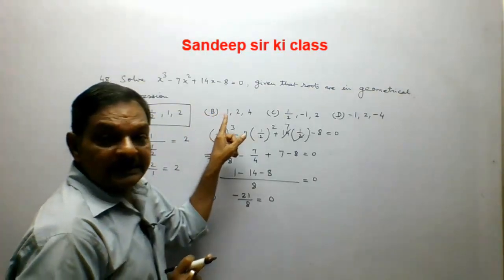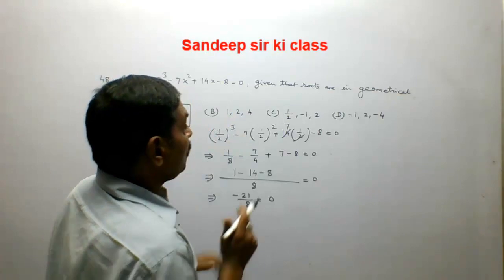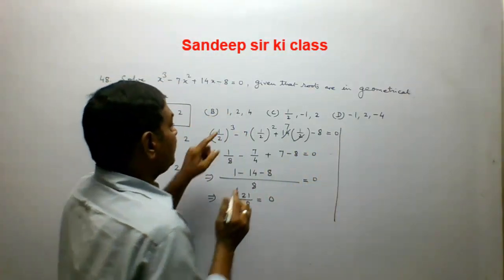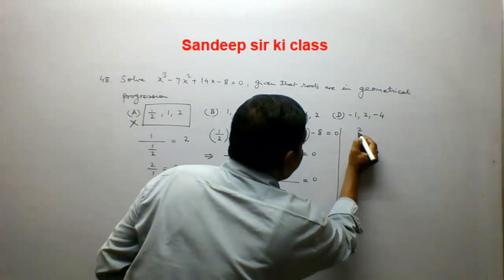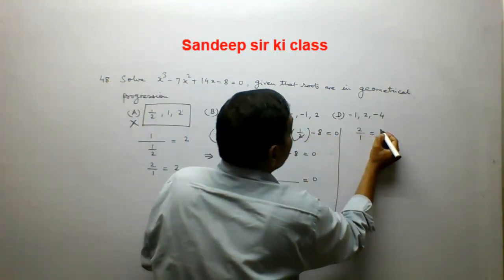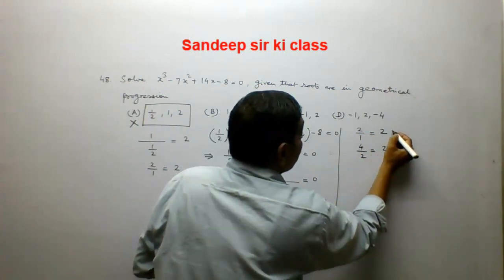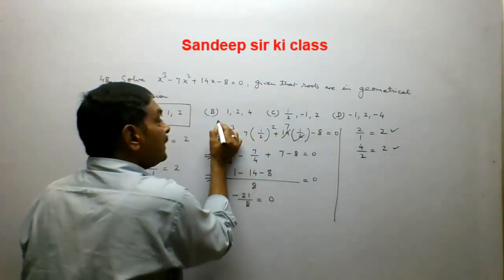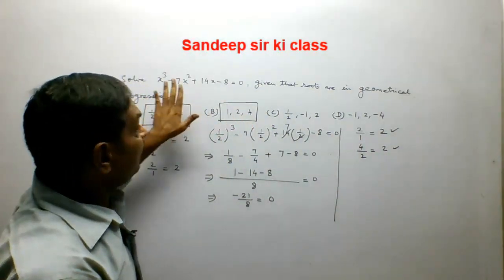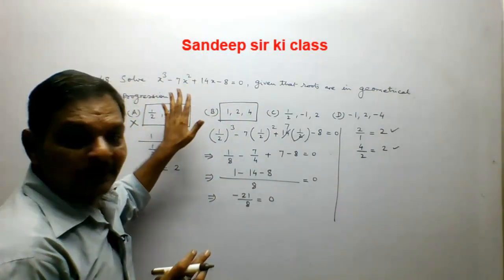Now we check option D. The values given are 1, 2, and 4. We check whether they are in geometrical progression. 2 divided by 1 gives common ratio 2, and 4 divided by 2 also gives 2. So the numbers are in geometrical progression.